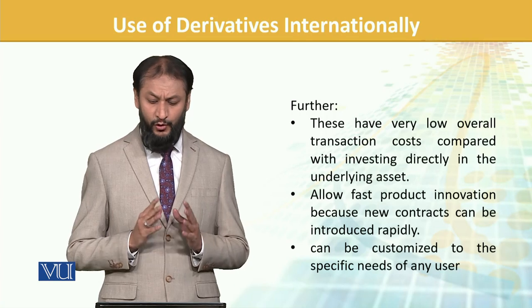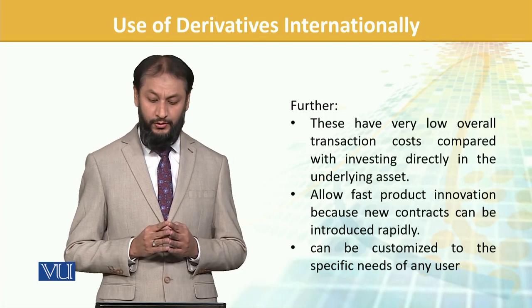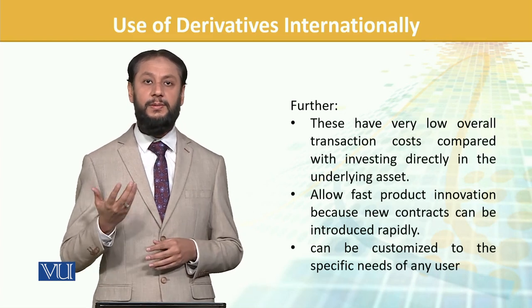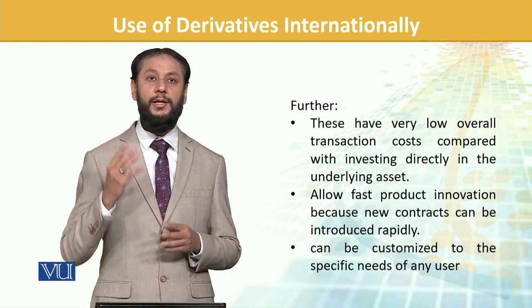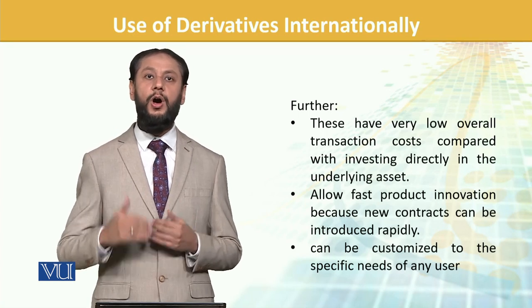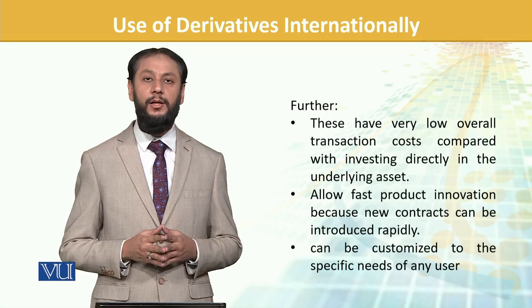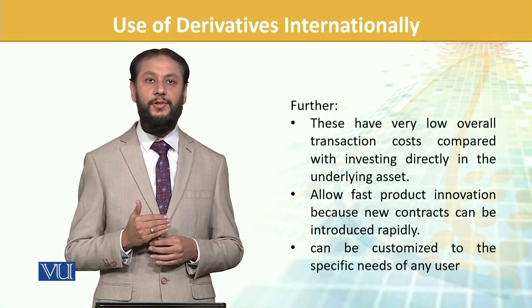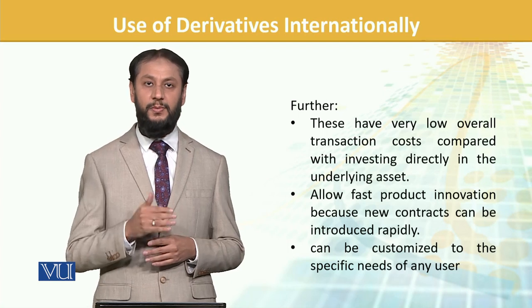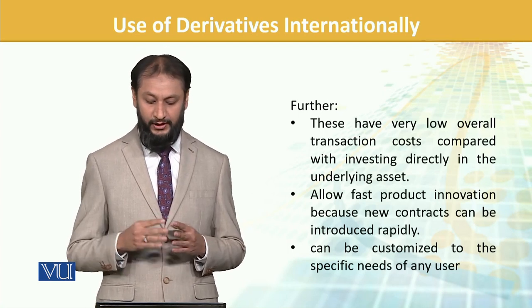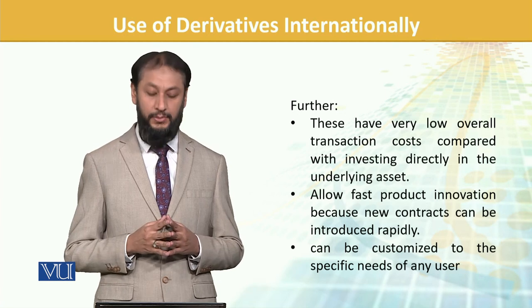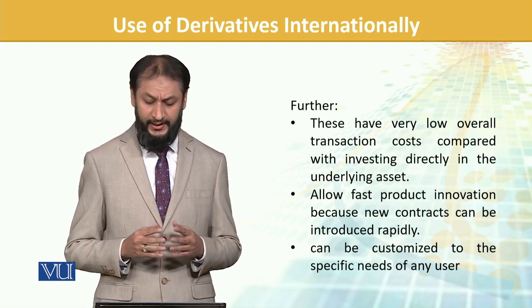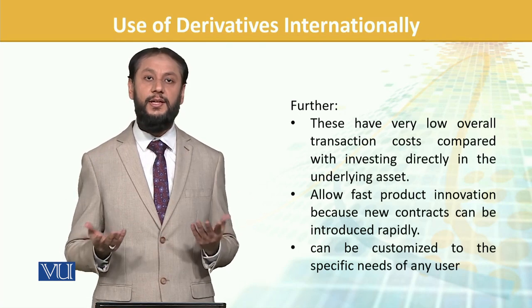Further, derivatives have very low overall transaction costs compared with investing directly. For example, if you want to buy 1,000 shares of a company directly, more money is required. But if you go into futures, less money is required — derivatives require less capital. They also allow fast product innovation because new contracts can be introduced. Lastly, derivatives can be customized according to your need.